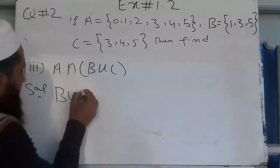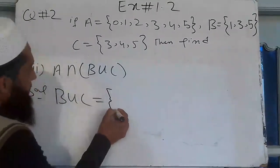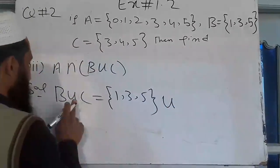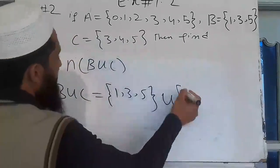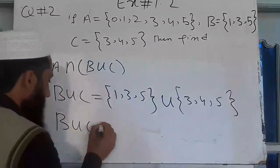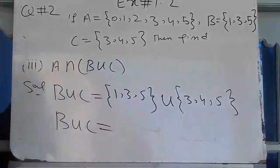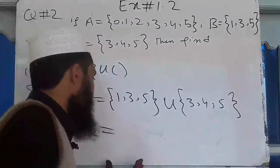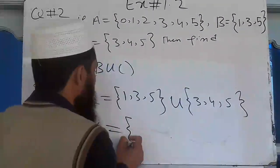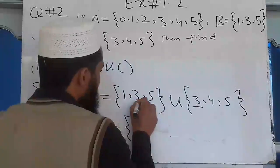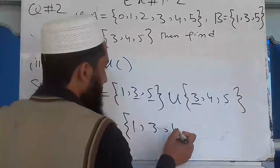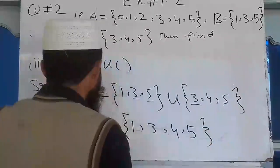If B union C equals B set {1, 3, 5} union operator C set {3, 4, 5}. Now B union C — union means take all elements, but repeated elements take only one time. So we get 1, 3 (double — take only once), 5, 4 (double — take only once).